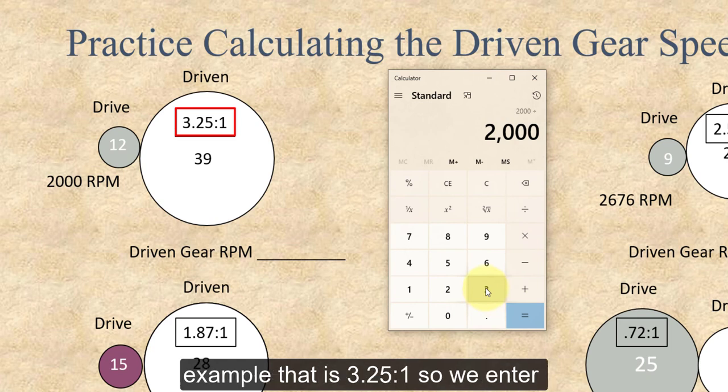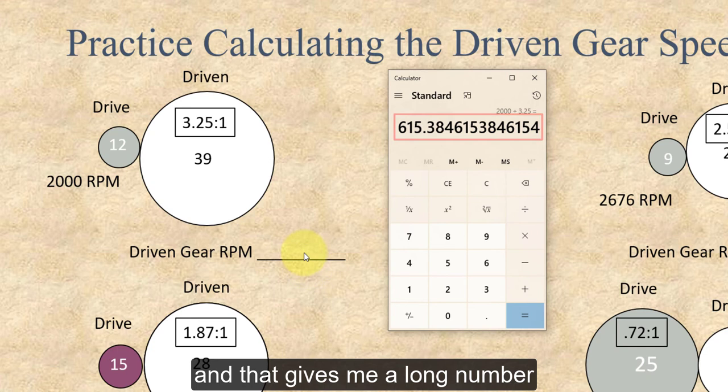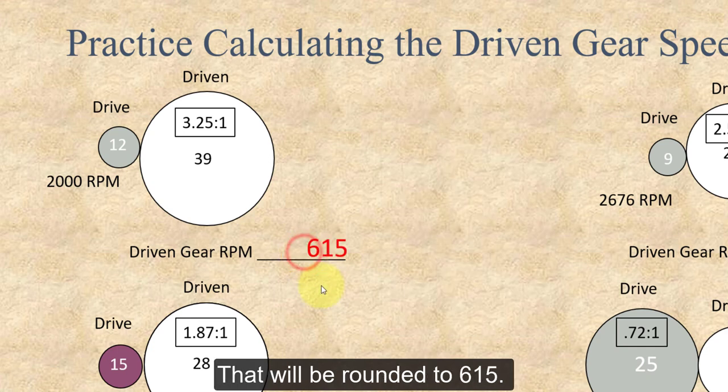And in this first example, that is 3.25 to 1. So we enter 3.25, and we hit the equal symbol. Now that gives me a long number that will have to be rounded, but that will be rounded to 615.